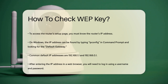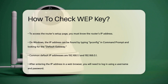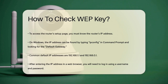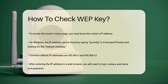Another method is to access your router's setup page. To do this, you need to know the IP address of your router. On a Windows computer, you can find this by opening the command prompt, typing ipconfig, and looking for the default gateway IP address. This is usually something like 192.168.1.1 or 192.168.0.1.